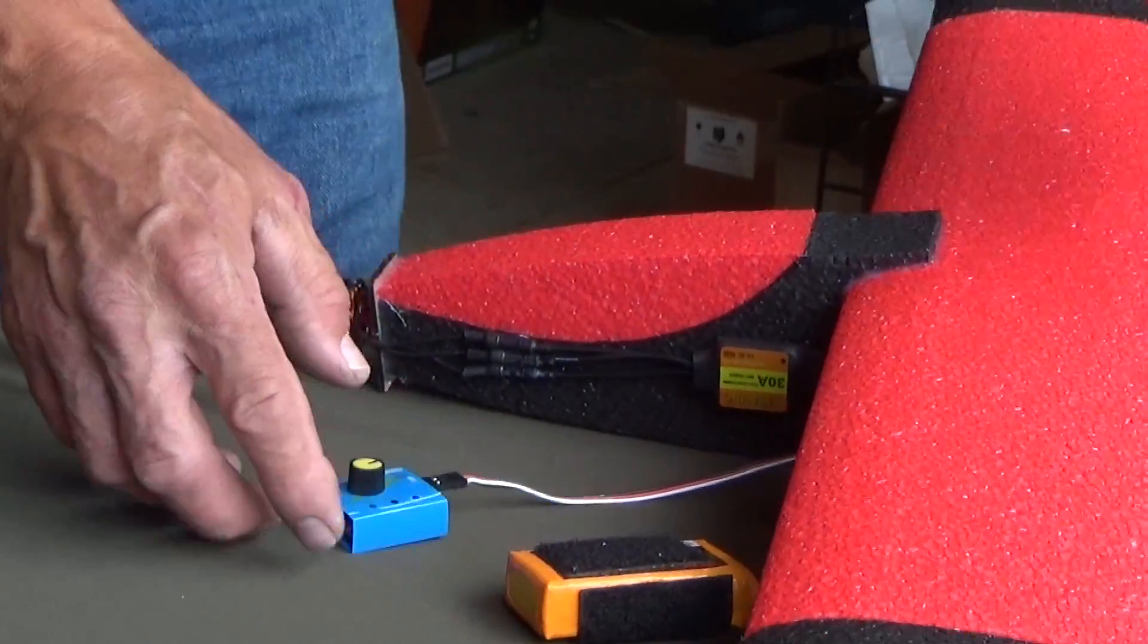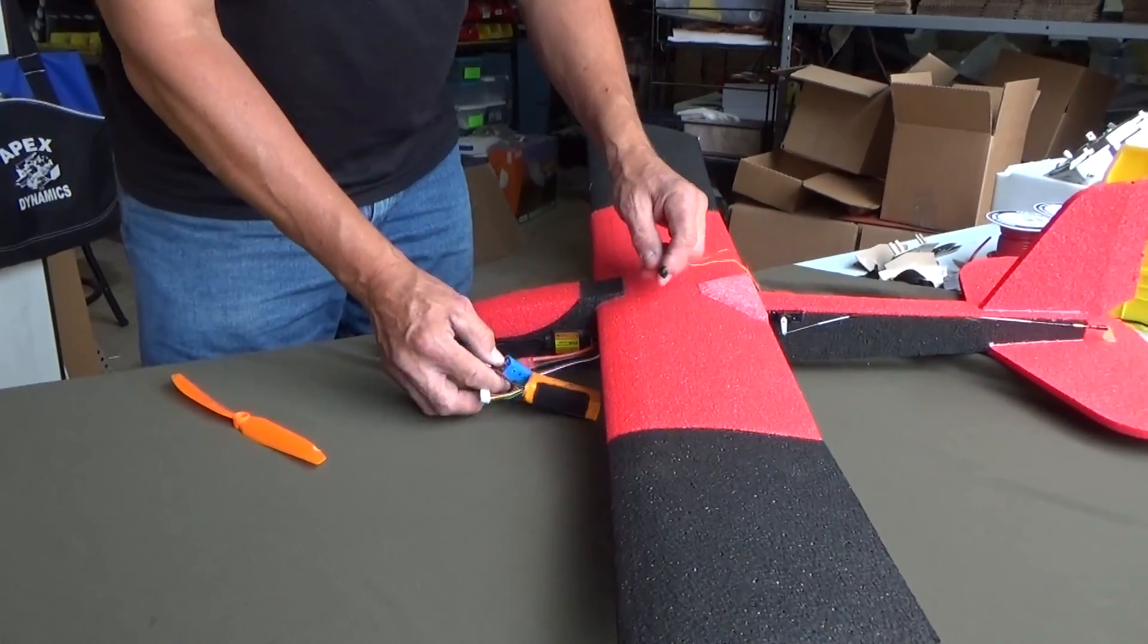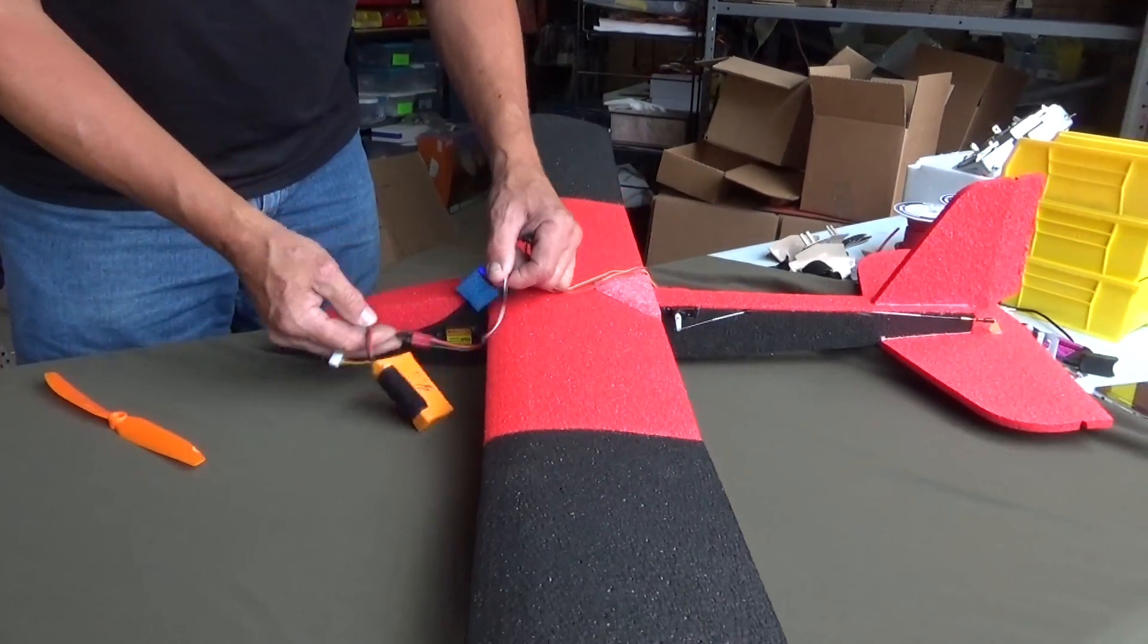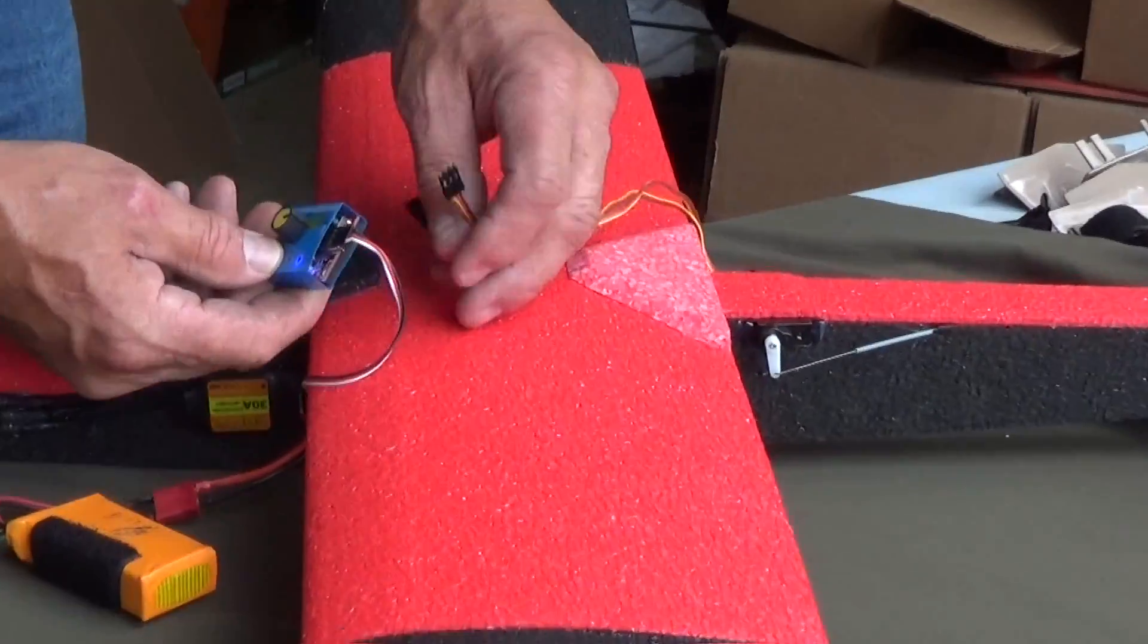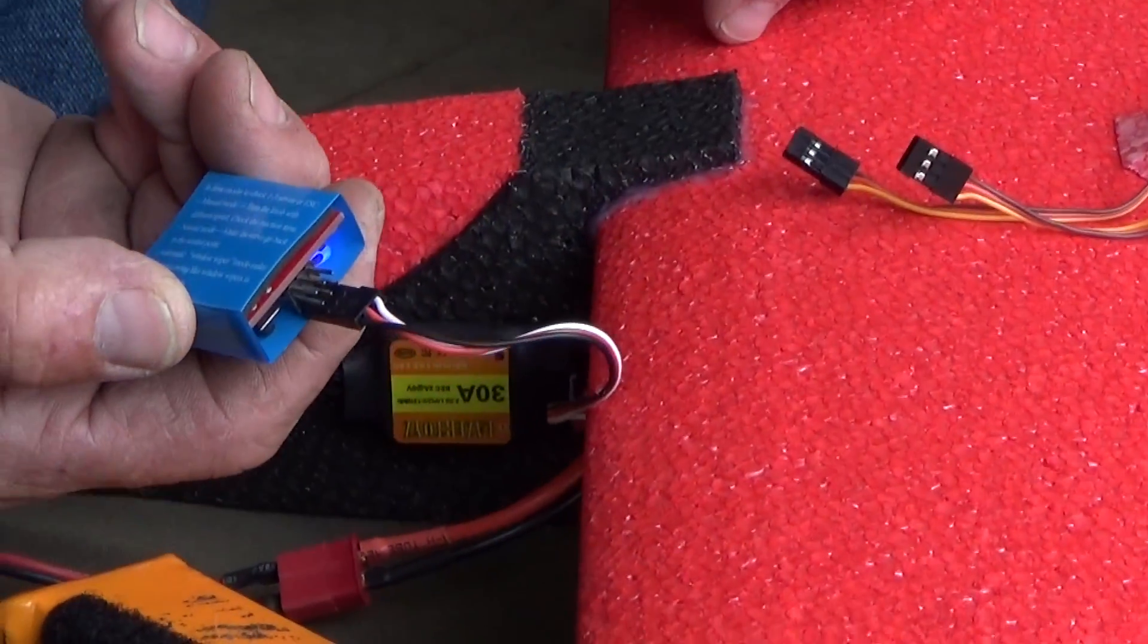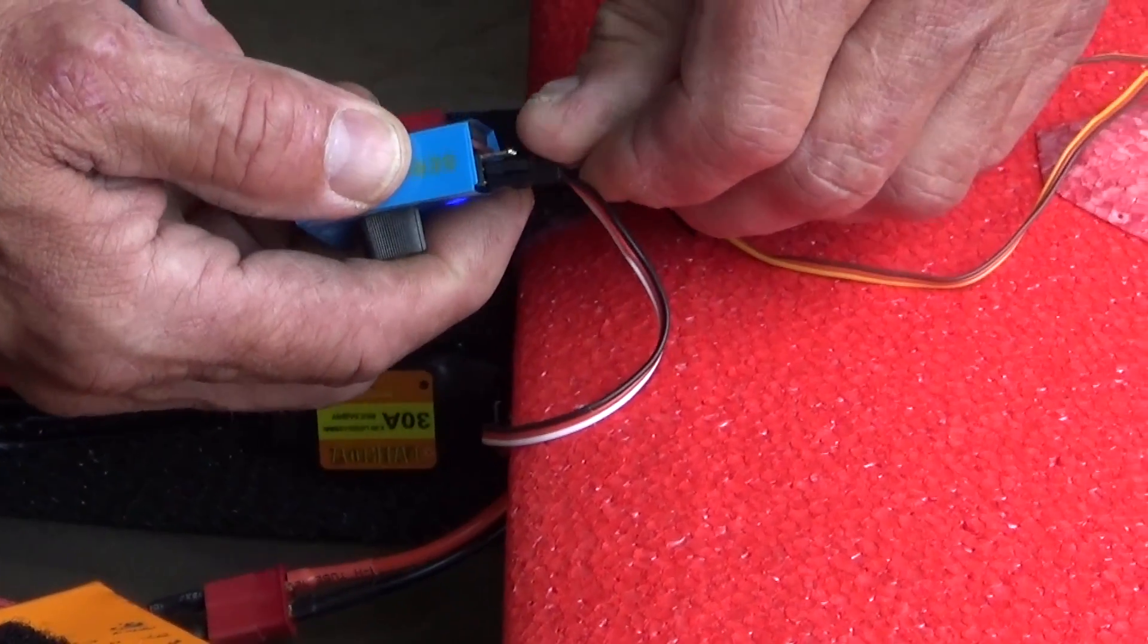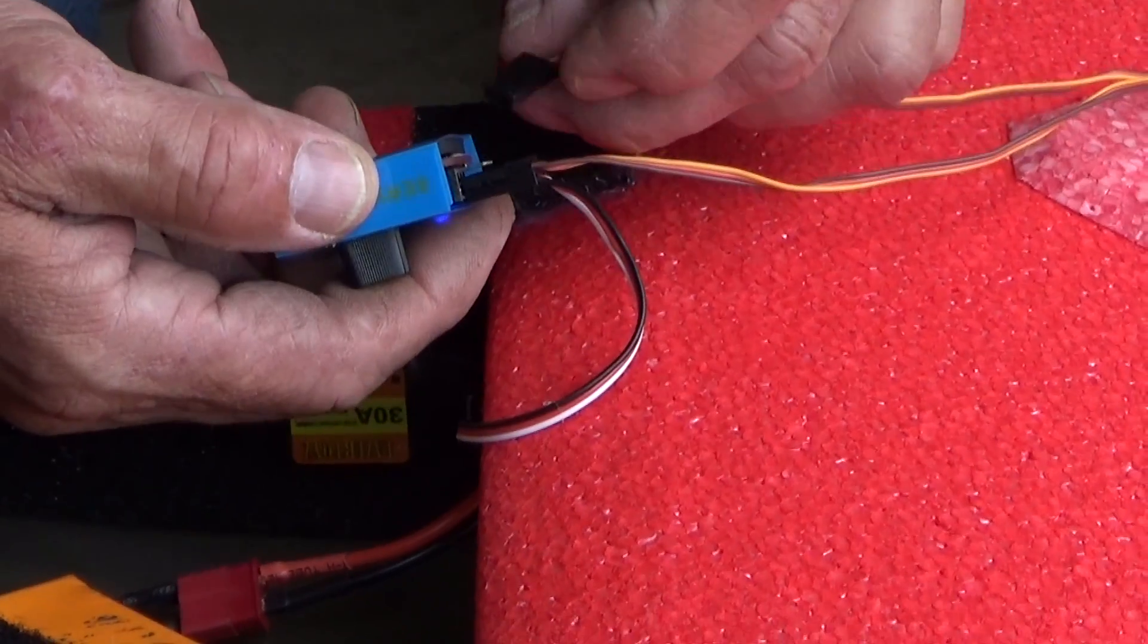Now we have power to this, we can actually test our servos. Our servo wires are right down here. I'm going to bring them over and I'm going to plug those in underneath with the signal wire in the same position. You'll probably hear the servos fire up.